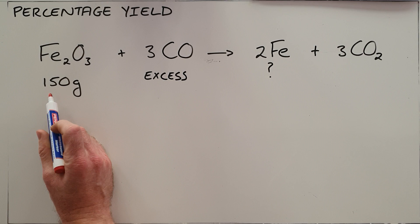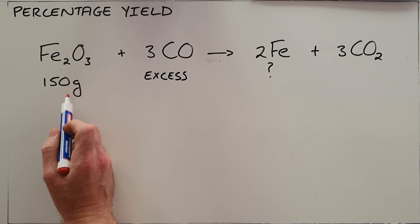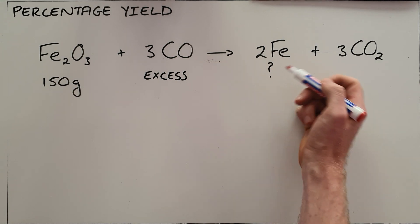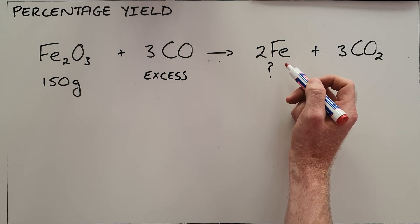So in this example, we are told that we start with 150 grams of iron oxide and excess carbon monoxide, and normally the question would be how much iron is formed.